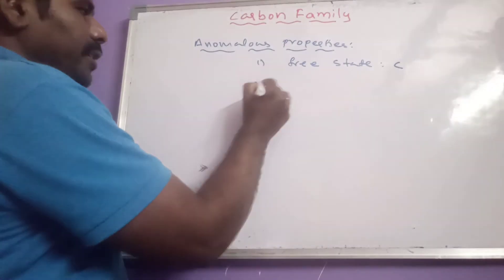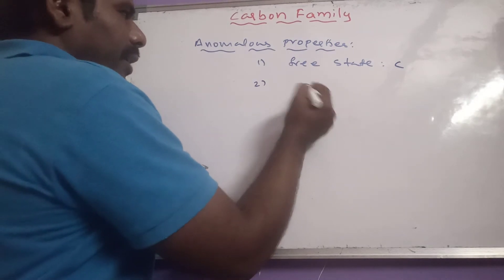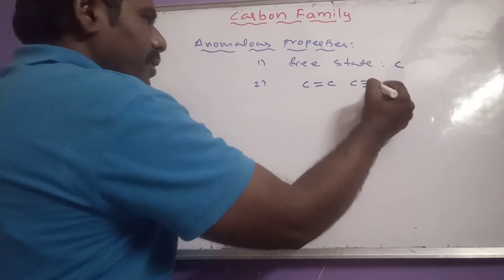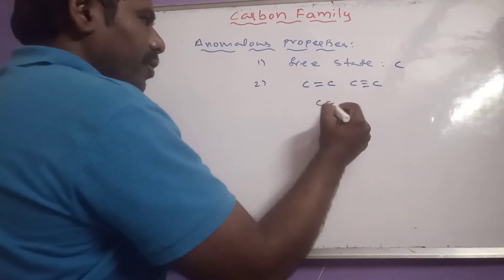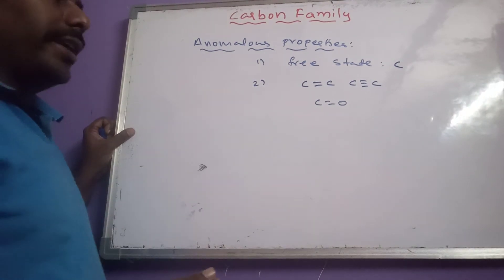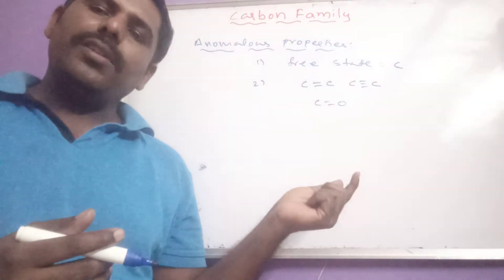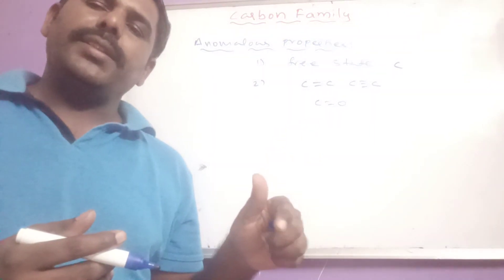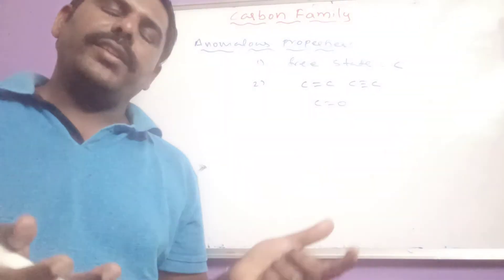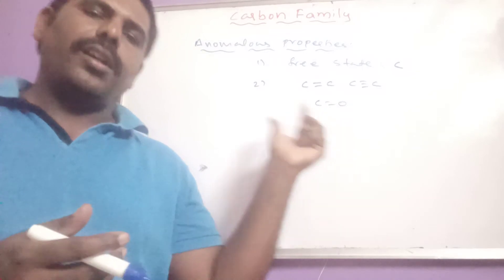The second anomalous property is that carbon can form multiple bonds with itself and also with other elements having high electronegativity. But other 4th A group elements do not form multiple bonds like carbon, either among themselves or with other elements.